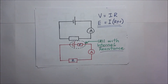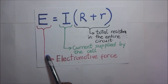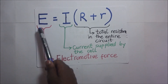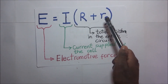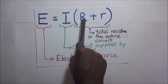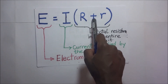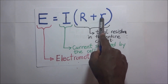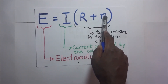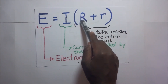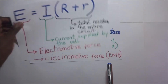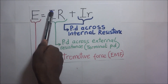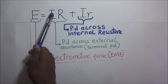This equation E = I(R + r) is our equation for EMF. The electromotive force equals the current times the total resistance, which includes the external effective resistance plus the internal resistance r, added in series. Expanding the brackets gives us: EMF equals the potential difference across the external circuit — which is the terminal PD — plus the potential difference across the internal resistance.